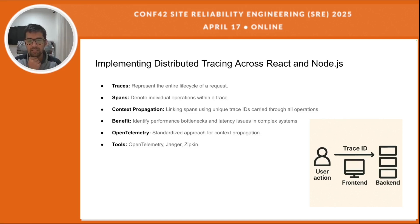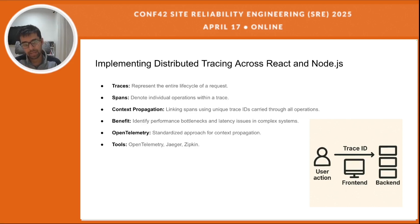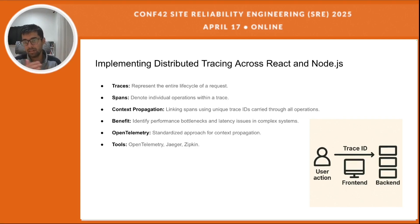Imagine a slow API call. Distributed tracing would allow us to see whether the delay is in the front end making the request, the backend receiving it, a specific function within the backend, a database query, or an external service call that is taking a really long time. This level of detail is invaluable for very efficient debugging.